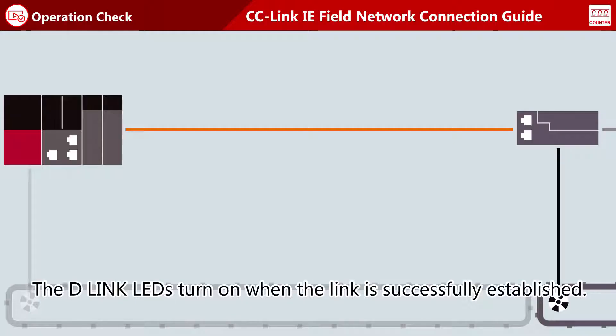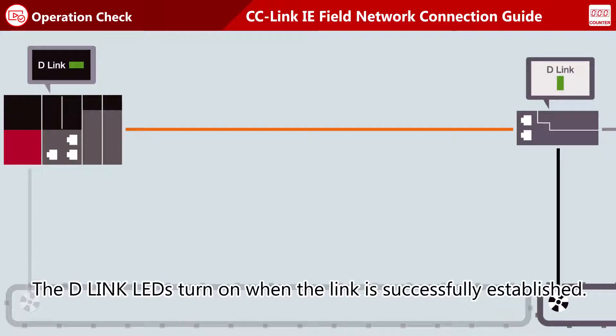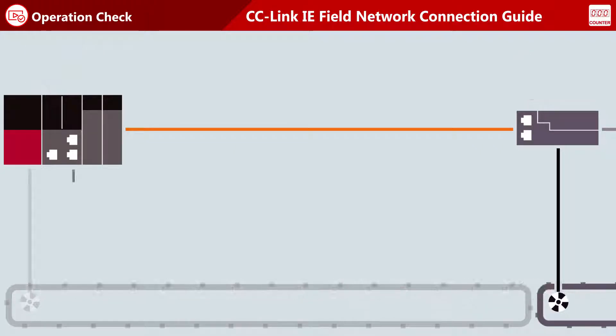If the link has been successfully established, the Data Link LEDs on the master and remote stations turn on. Turn on the devices and check the operation.